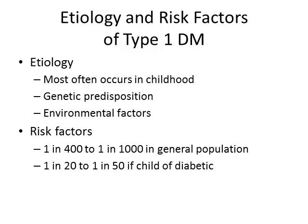The statistics show 1 in 400 in the general population have Type 1 diabetes, compared to 1 in 20 to 1 in 50 incidence in a child if a family member already has it.